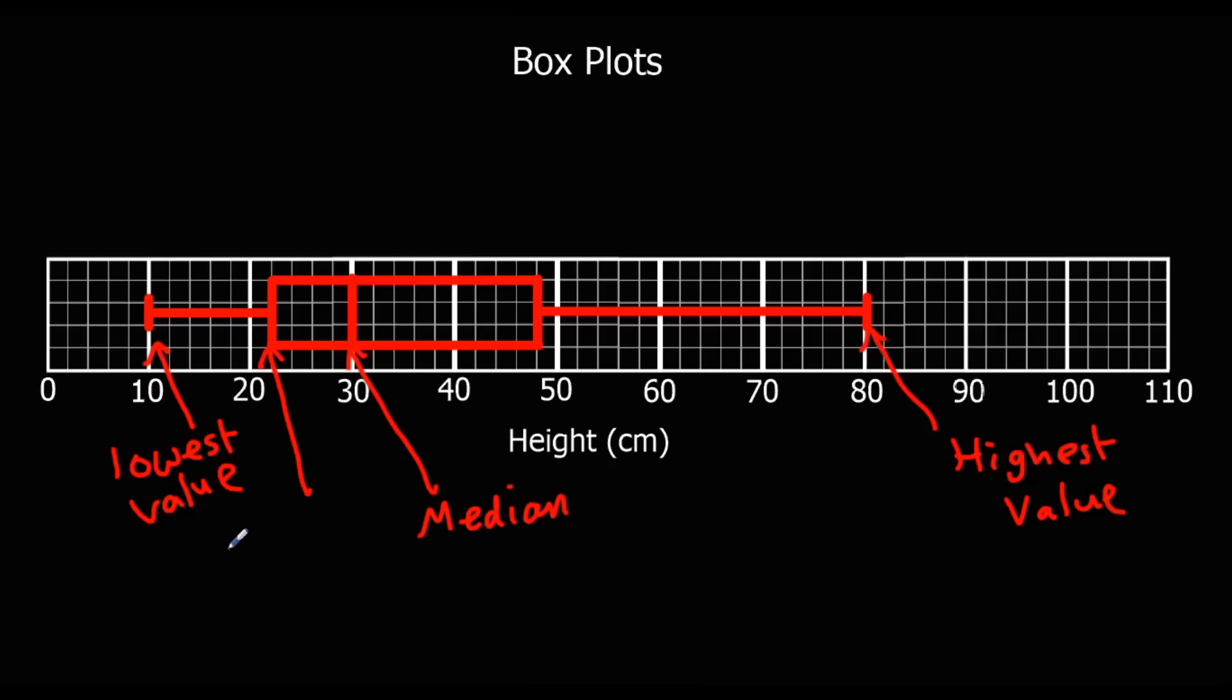This is the lower quartile, so that's a quarter of the way in. So if you imagine all the plants were lined up in a row, that's the lowest one. This is the lower quartile, that's the median. And this one is the upper quartile. So you have to know what each of the lines in a boxplot means.